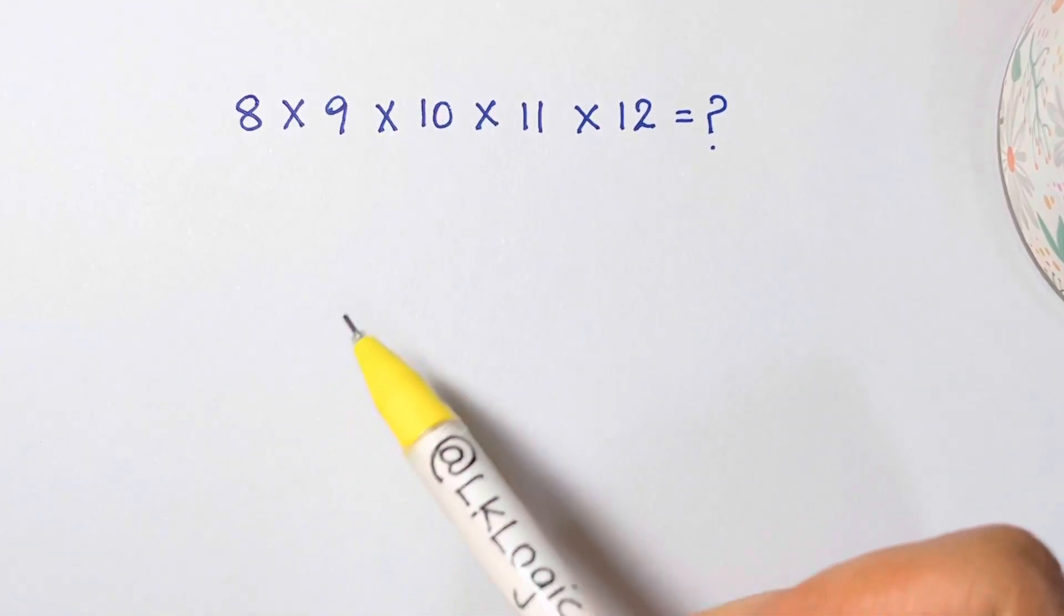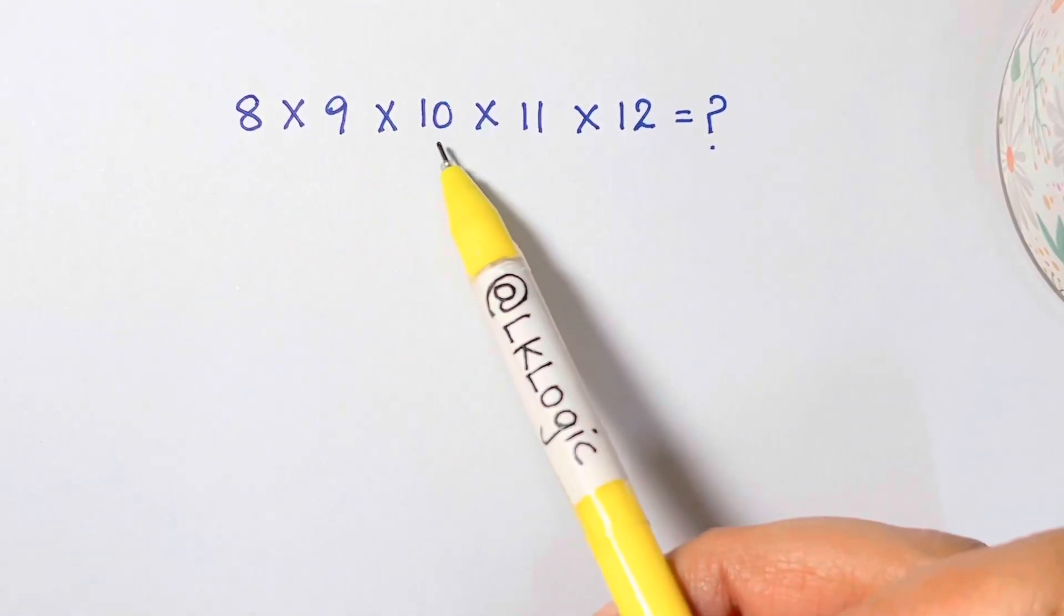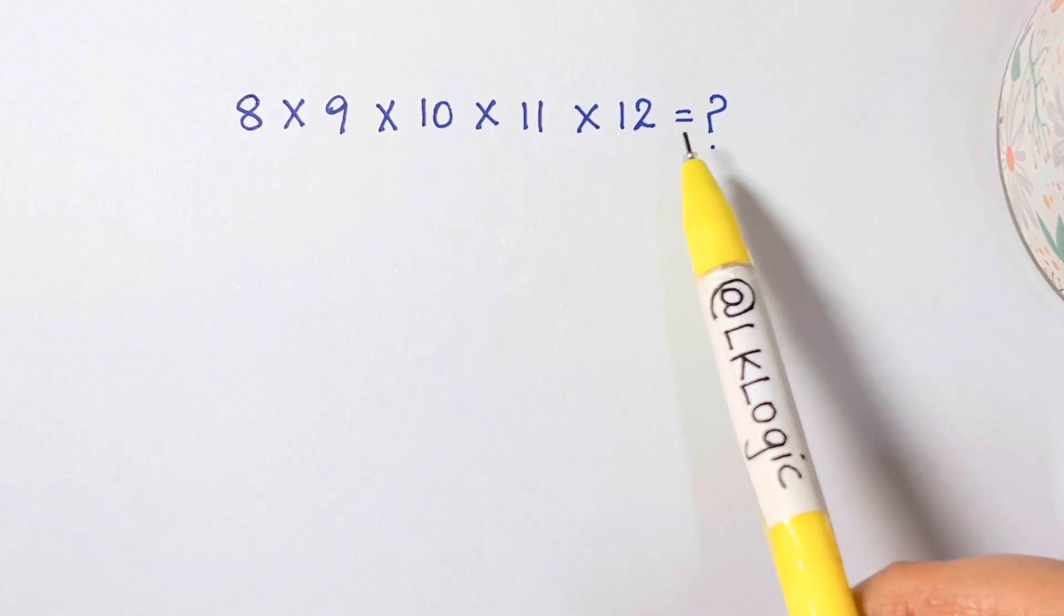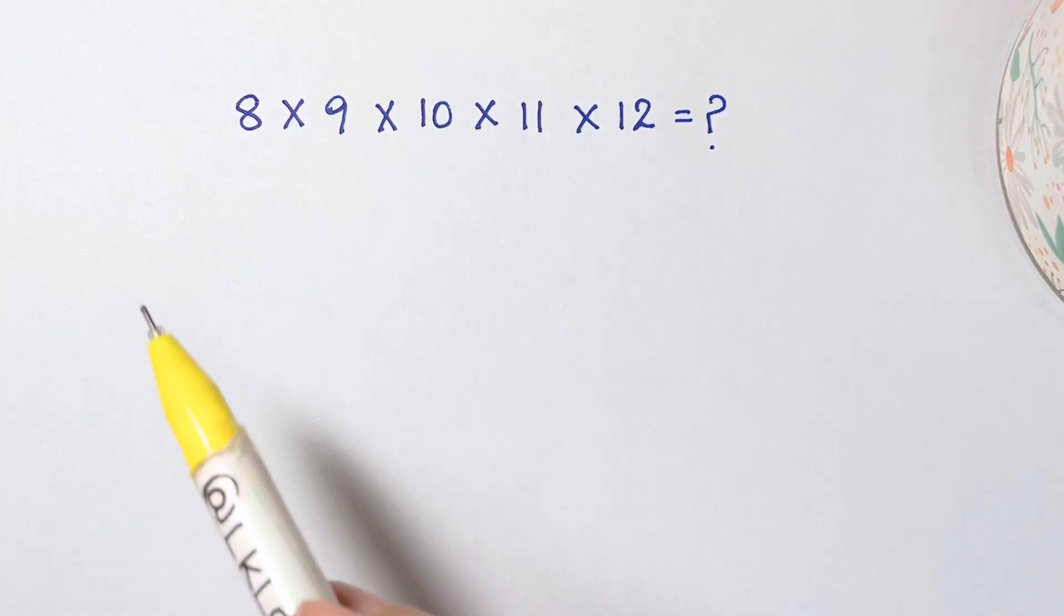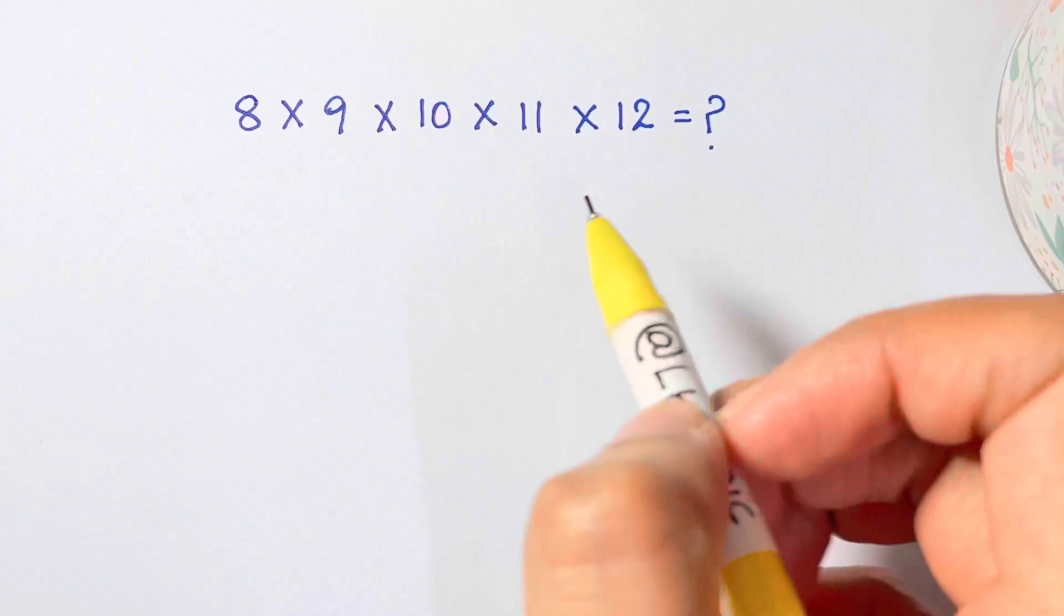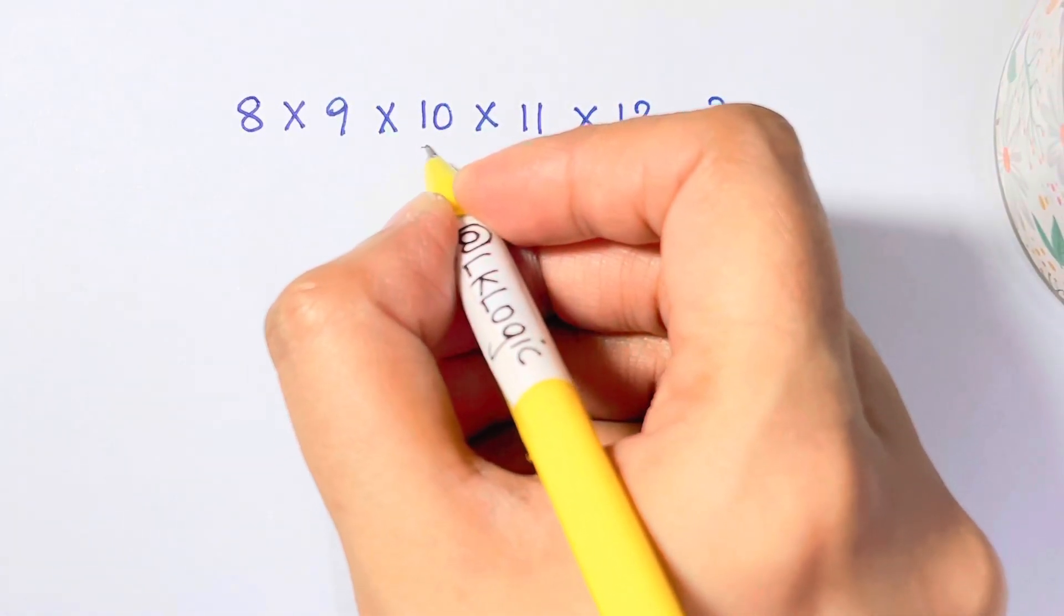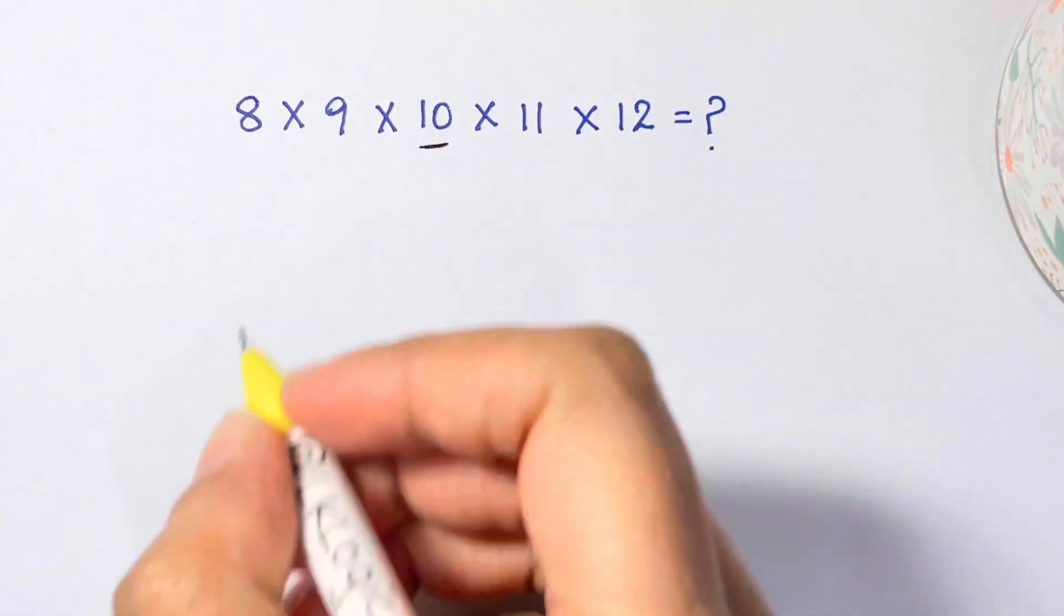Hi everyone, here we are going to solve 8 × 9 × 10 × 11 × 12 equals what. So what we're going to do is convert all in terms of the base 10.